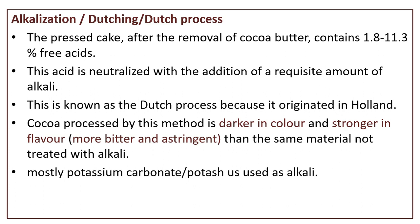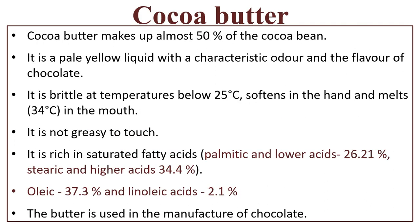Alkalization — the Dutch process: the pressed cake after removal of cocoa butter contains 1.8 to 11.3% free acids. This acid is neutralized with the addition of a requisite amount of alkali — that is known as alkalization. This is known as the Dutch process because it originated in Holland. Cocoa processed by this method is darker in color, stronger in flavor, more bitter and astringent than the same material not treated with alkali. Mostly potassium carbonate or potash is used as the alkali.